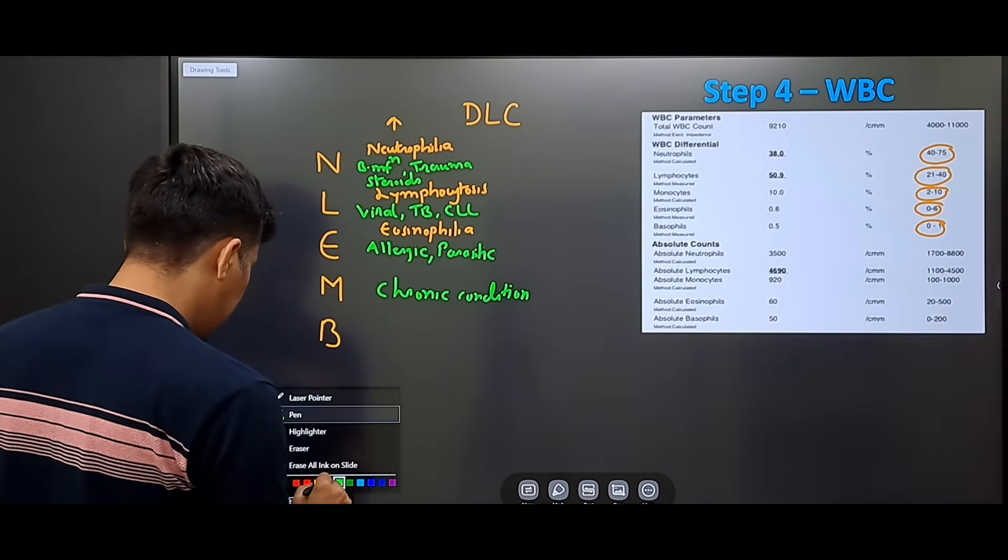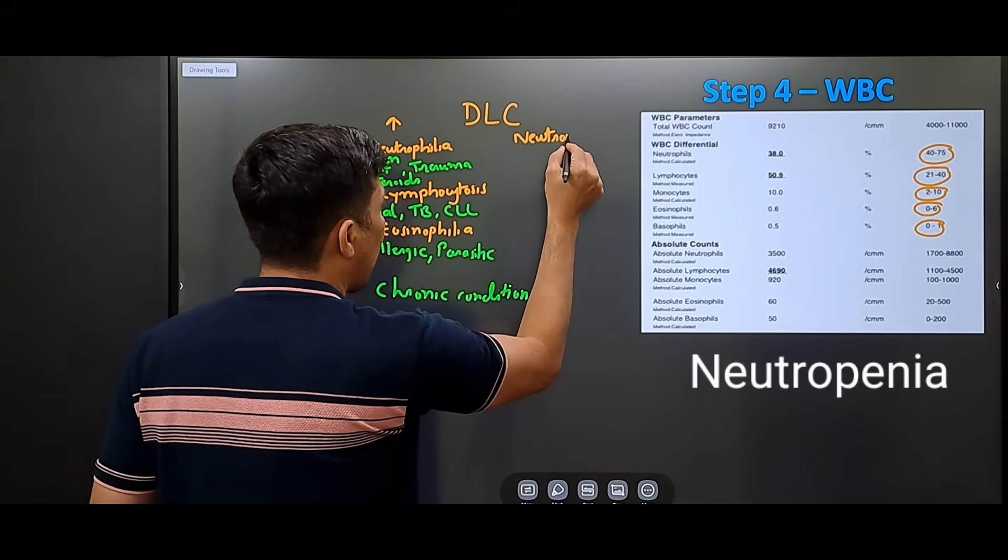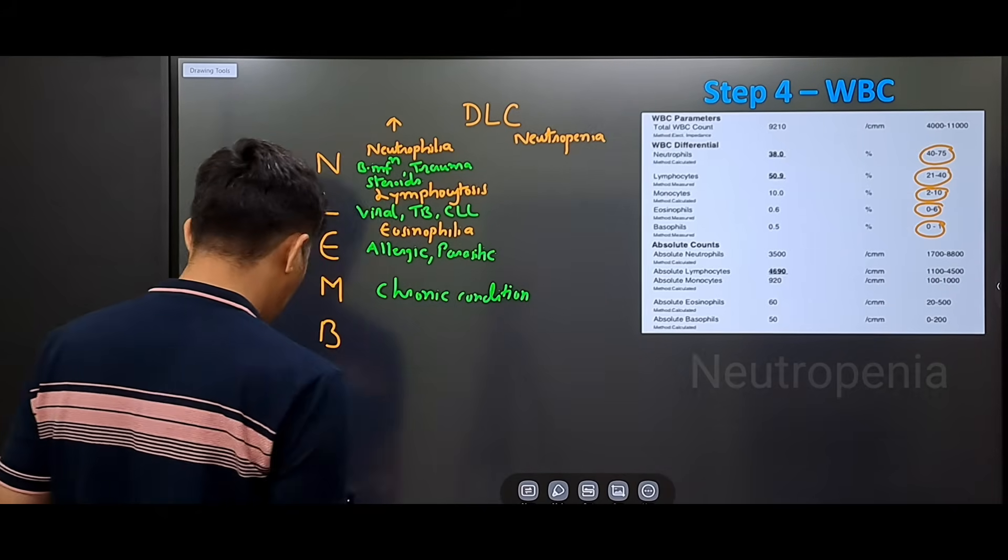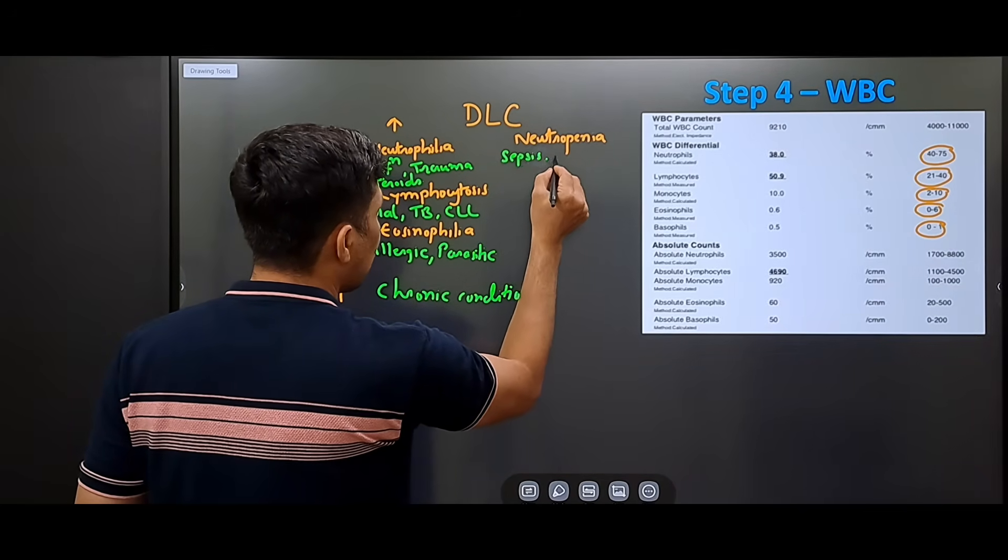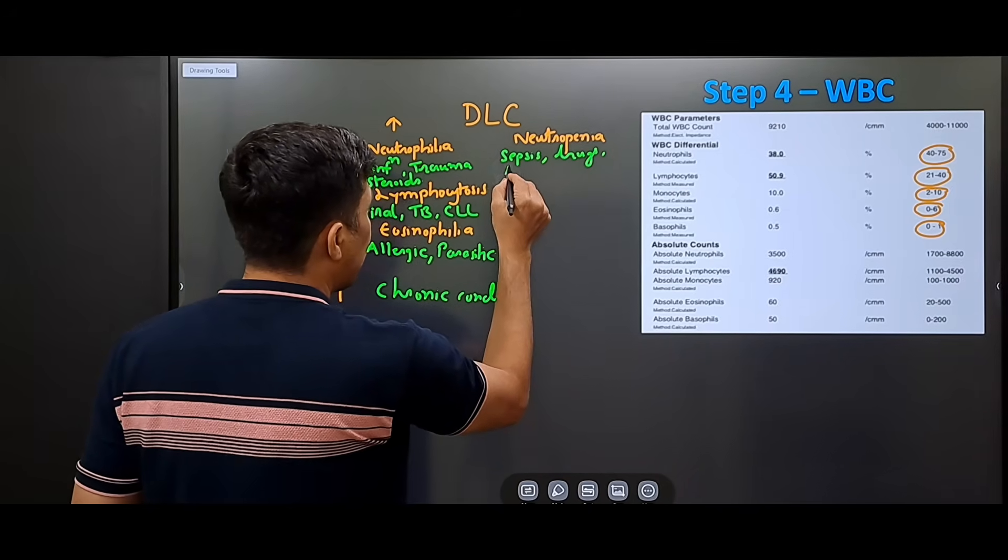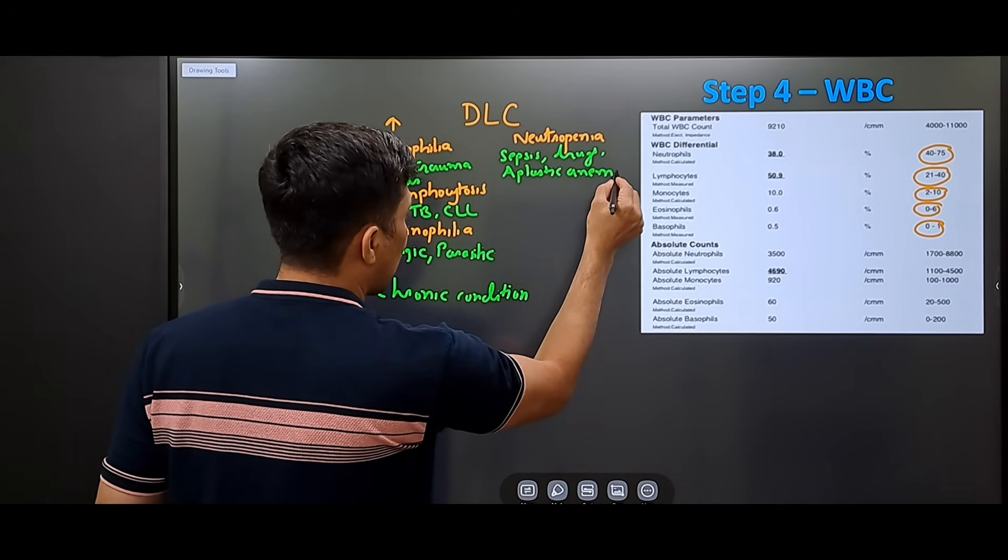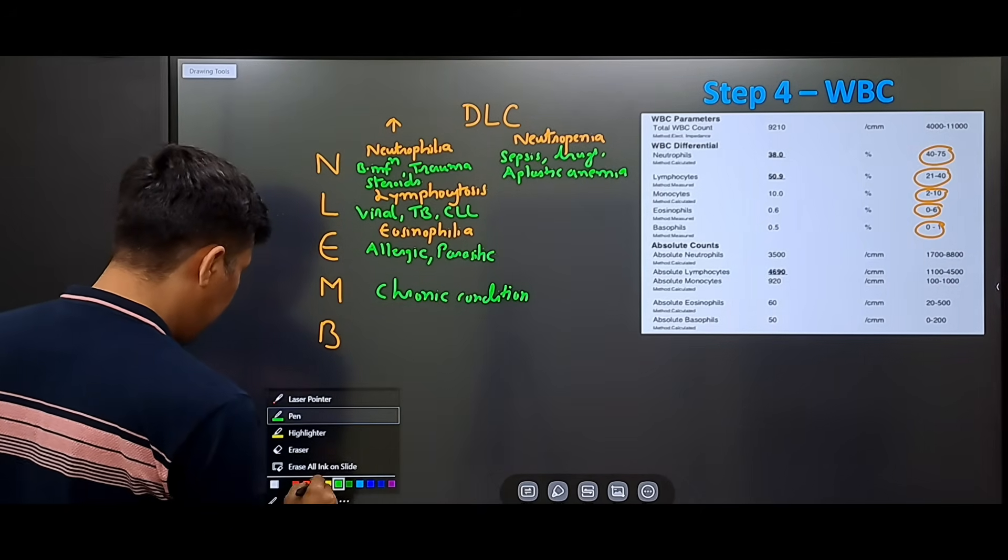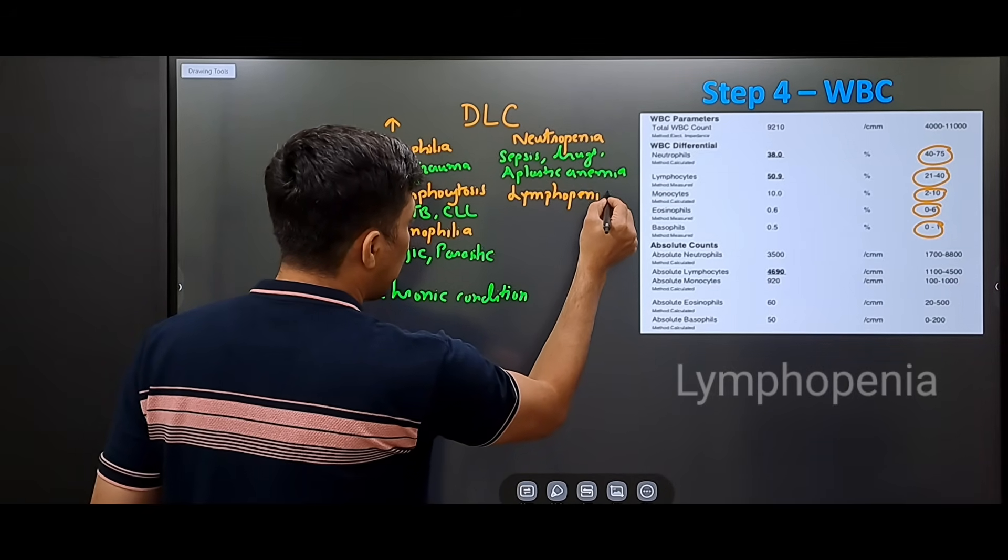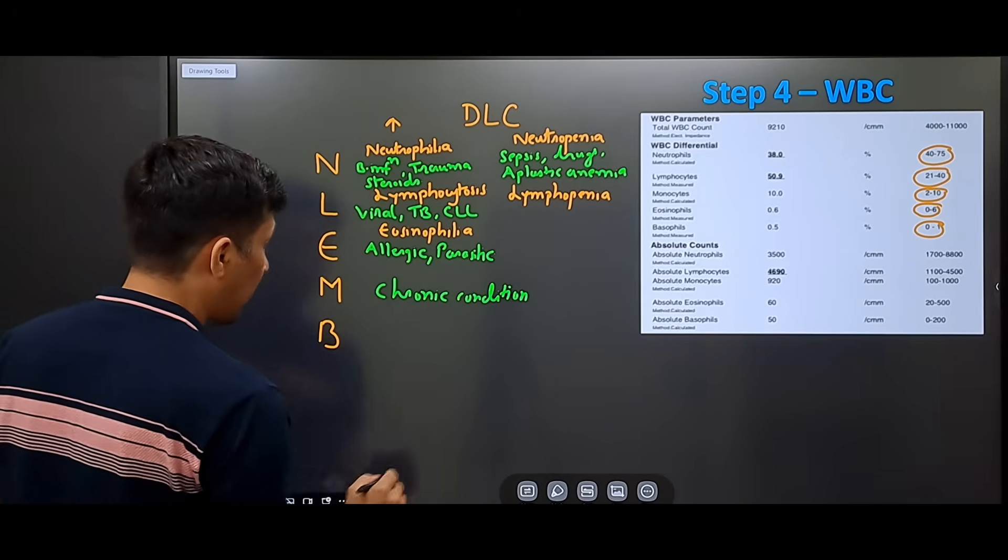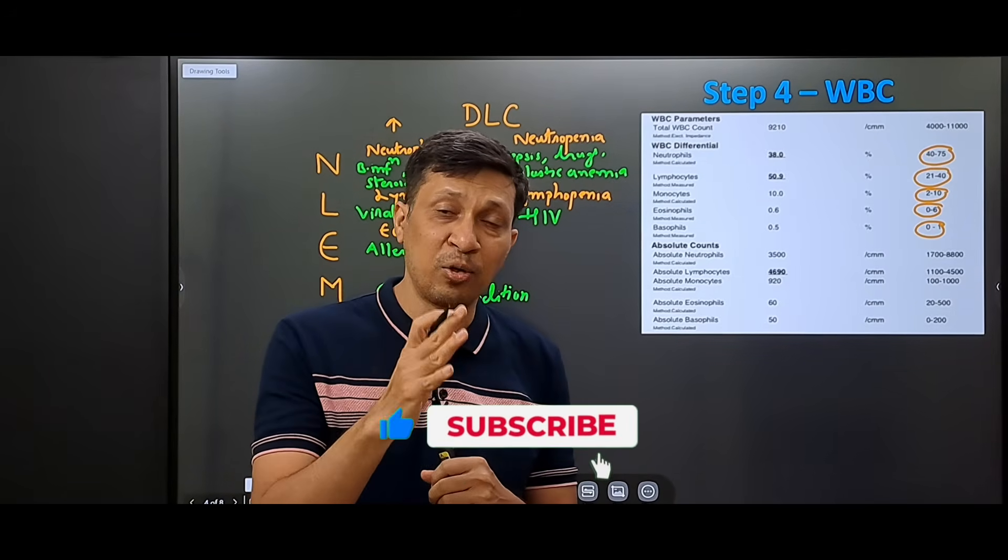There are also certain conditions when the neutrophils are reduced than normal. It is called as neutropenia. When neutropenia is seen, it is seen in sepsis, with certain drugs and in aplastic anemia. There can also be sometimes lymphopenia, means the lymphocytes are reduced. This lymphopenia is seen in main condition is HIV. This is an important step of looking at the differential leukocyte count.